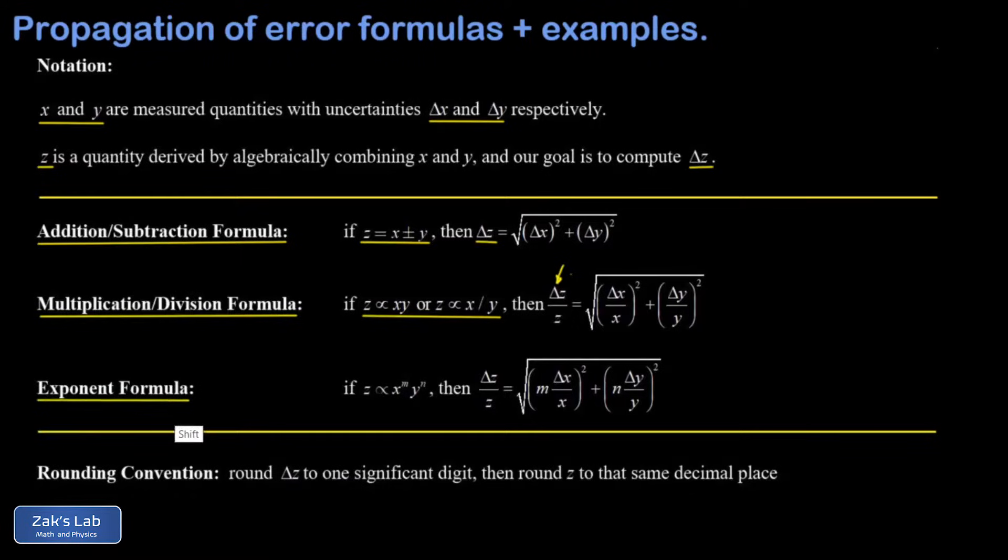Finally, we look at the exponent formula. If z is proportional to a product of powers of x and y, then we simply modify the multiplication and division formula by putting those exponents inside the parentheses before we square those relative uncertainties of x and y.